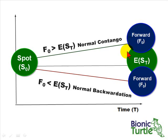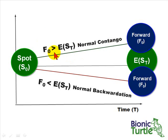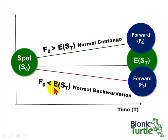If the forward price is greater than the expected future spot price, we have normal contango. The forward price — which we can observe — is greater than the expected future spot price, which we really can't observe currently. On the other hand, if the forward price is less than the expected future spot price, we have normal backwardation.